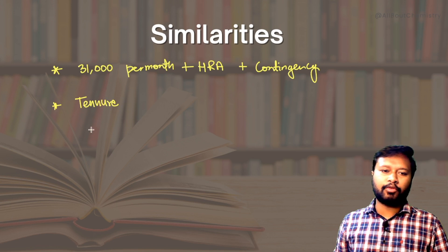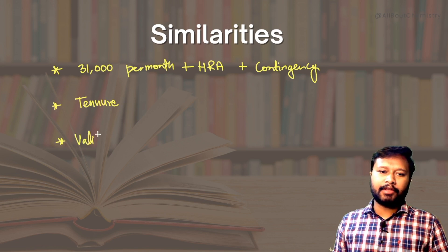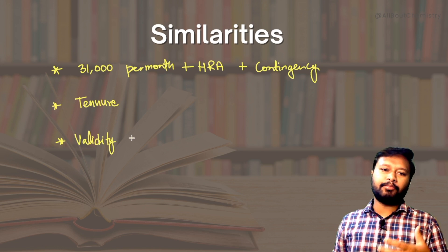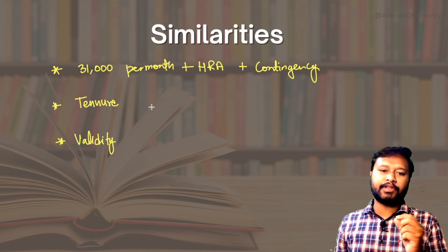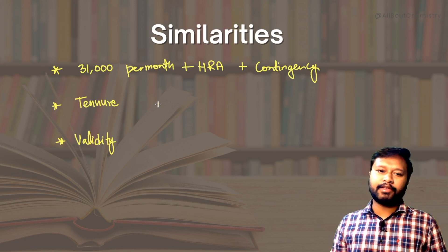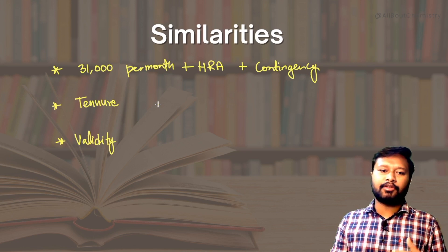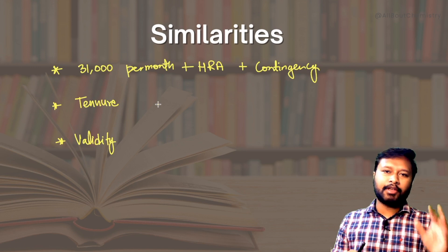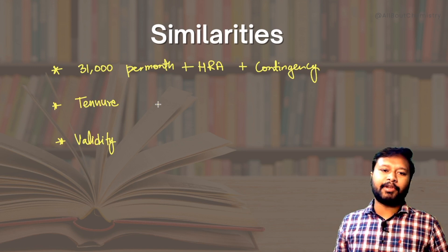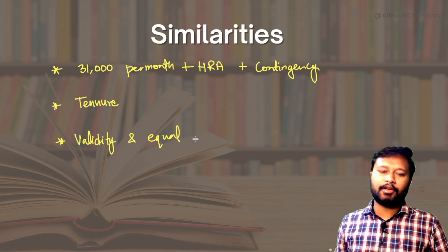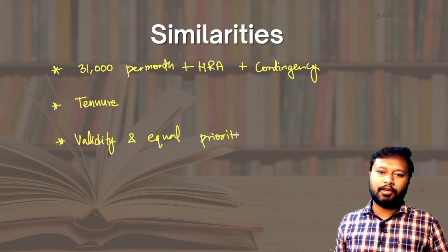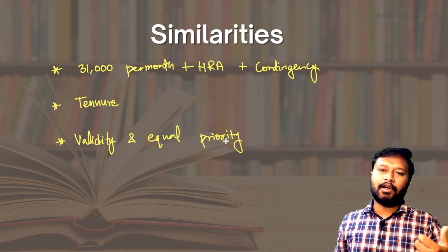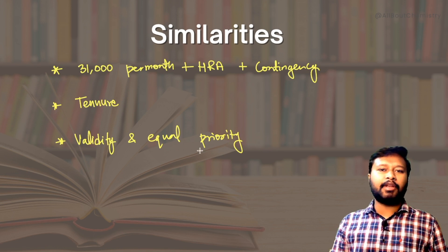The third similarity is validity — where each fellowship is recognized. Both CSIR JRF and UGC JRF are considered equal and equivalent in all IITs, all ISERs, all IASc institutions, and all university admissions. So wherever you want to take admission as a PhD scholar, you will be considered equivalent regardless of whether you hold CSIR JRF or UGC JRF.